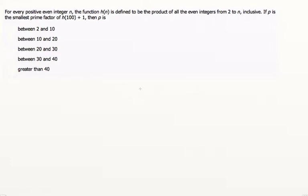So let's get started. For every positive even integer n, the function h(n) is defined to be the product of all the even integers from 2 to n inclusive. If p is the smallest prime factor of h(100) + 1, then p is: